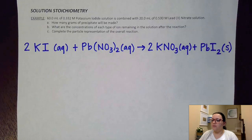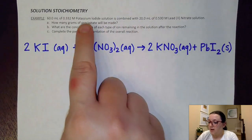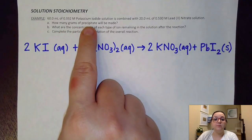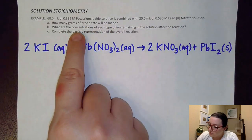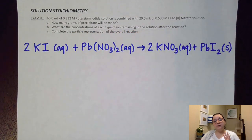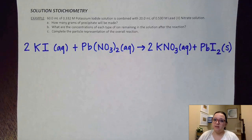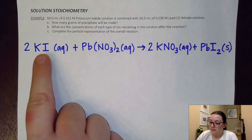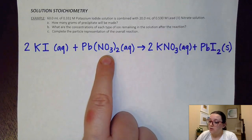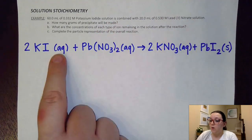To start us off, they've given me amounts of two different reactants, and we noticed that both of them are compounds. The very first step I took was to write my balanced reaction down. Potassium iodide is KI; lead nitrate is Pb(NO₃)₂. They mentioned that both of those are solutions, so I put aq.